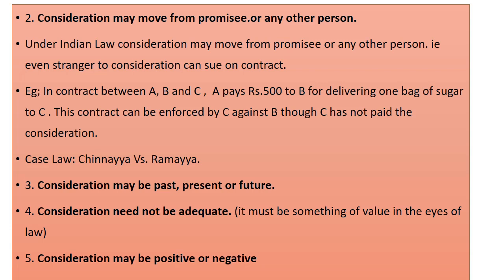Point number five: consideration may be positive or negative. Positive consideration is doing something — giving something, services, etc. For example, in an agreement between A and B, A agrees to repair the TV of B and B agrees to pay the amount. That is positive consideration. In case of negative consideration, which includes not doing something: for example, C the creditor agreed not to take legal action against B for the recovery of a loan. So not taking legal action is a negative consideration.